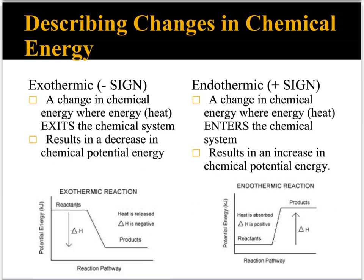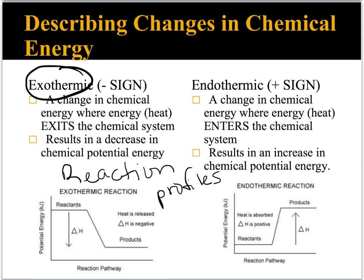We represent exothermic and endothermic processes using what's called a reaction profile, and that's what both of these diagrams are showing. Reaction profiles give us a way to track energy. In an exothermic change, energy is released to the surroundings — heat energy is released — and the materials themselves have a decrease in chemical potential energy. So the reactants are at a higher level of energy than the products. We'll talk about what delta H is and what its sign means.